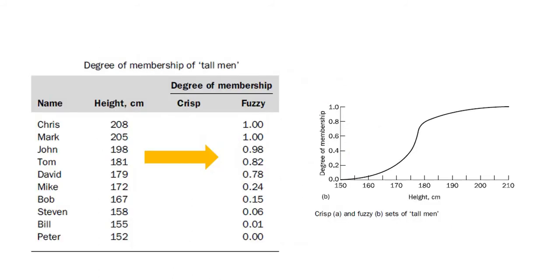For example, if you have degree of membership of tall men, if Chris has 208 height and Peter has 152, Chris has the highest value of height and Peter has the lowest. The highest one is represented by 1, meaning he is the tallest. Peter is 0, and ranging between it varies from 0 to 1.